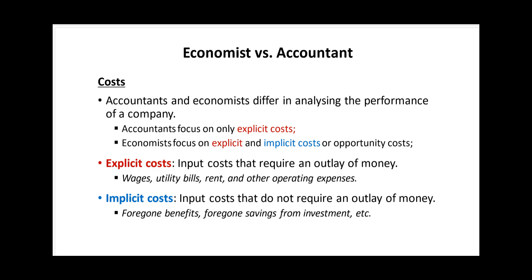Implicit costs, on the other hand, do not require an outlay of money. They represent the company's opportunity costs of utilizing the resources it already owns — for example, resources contributed by the owners of a company, or paid out-of-pocket costs such as a building used for business operations rather than generating rental profit. Sometimes implicit costs are referred to as implied costs, notional costs, or imputed costs.